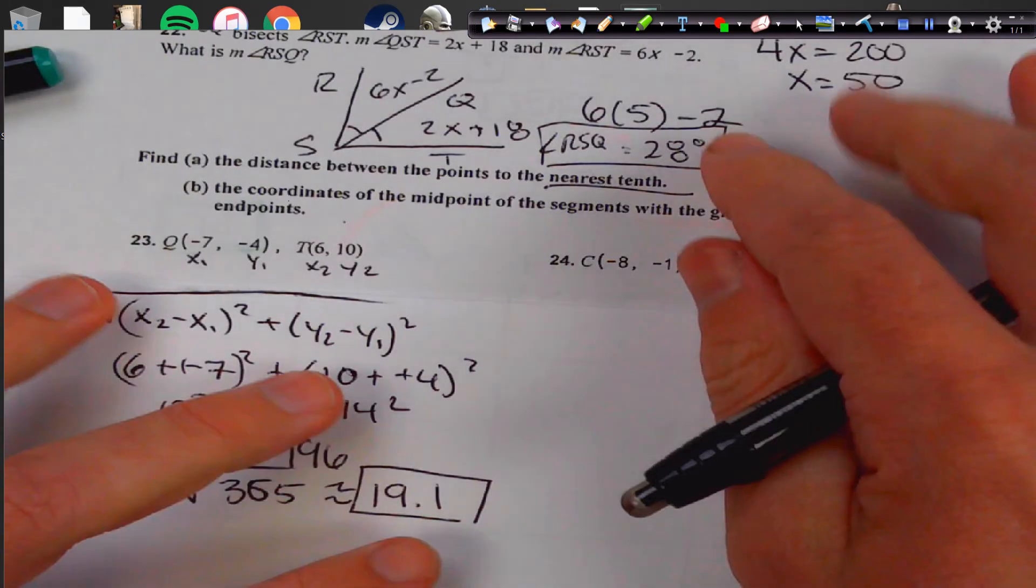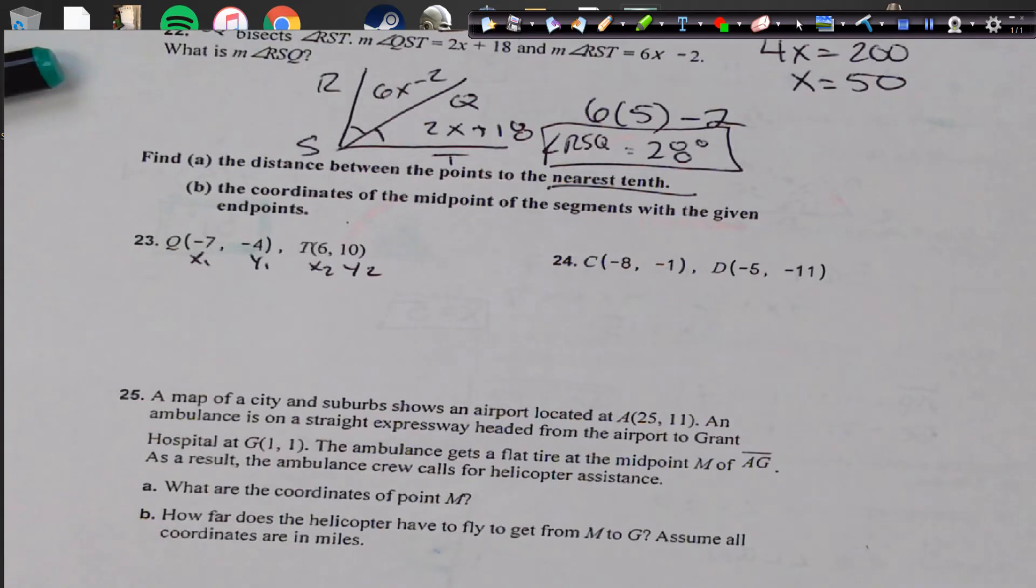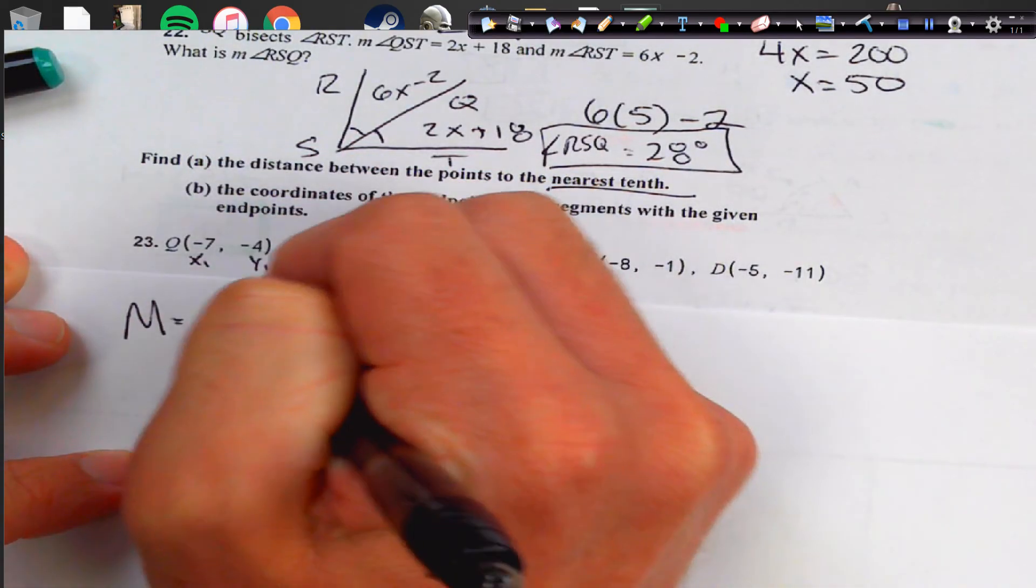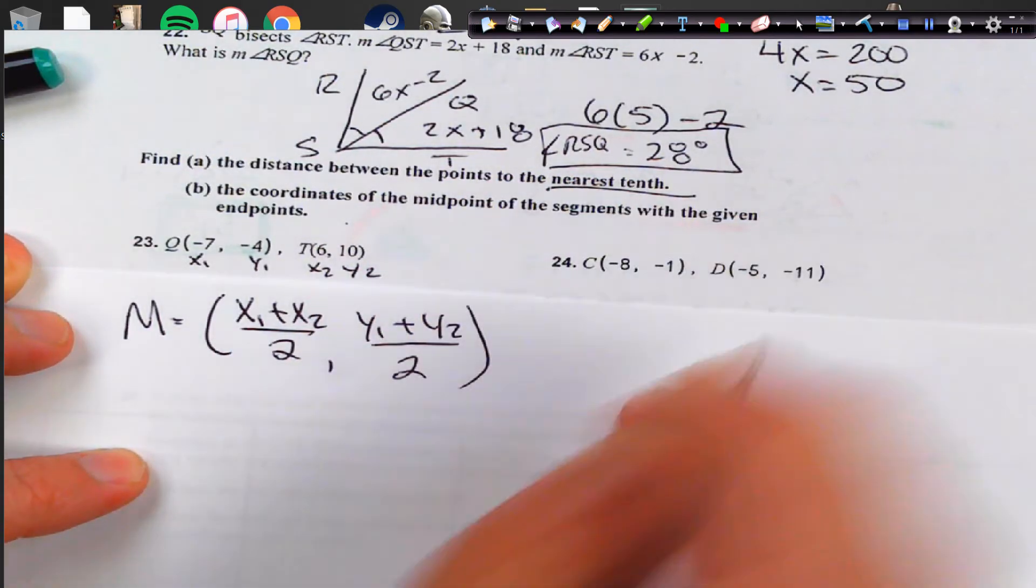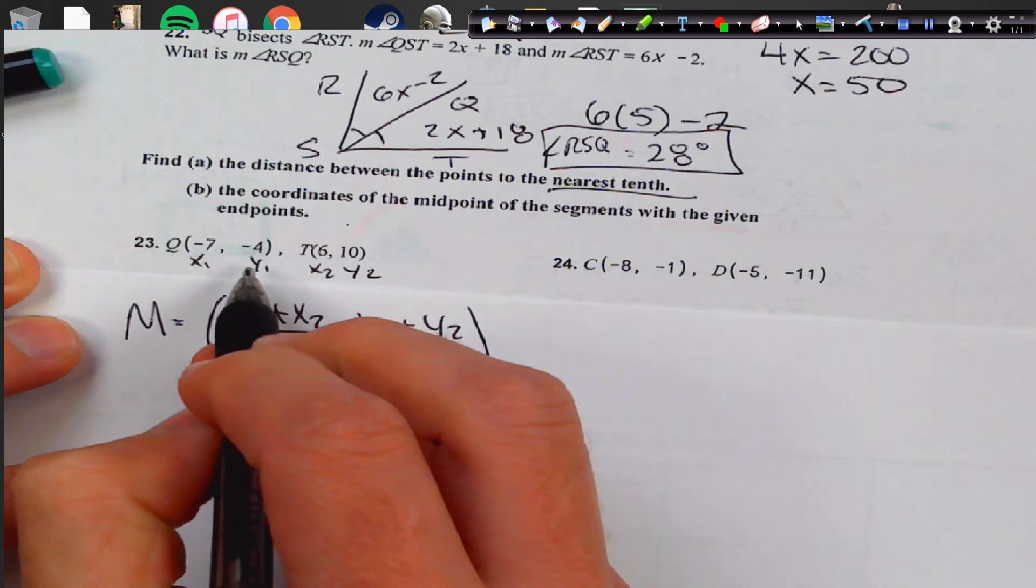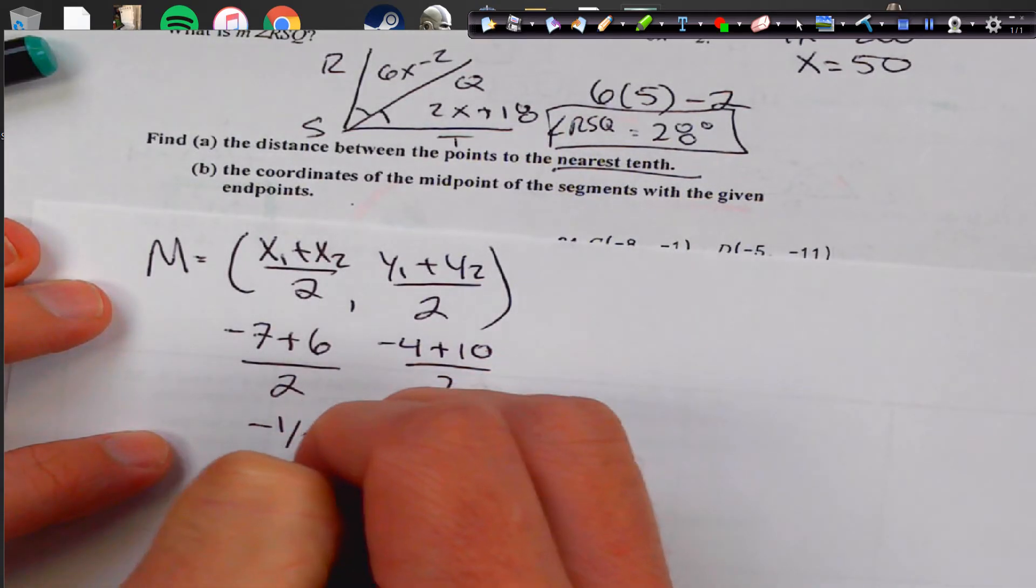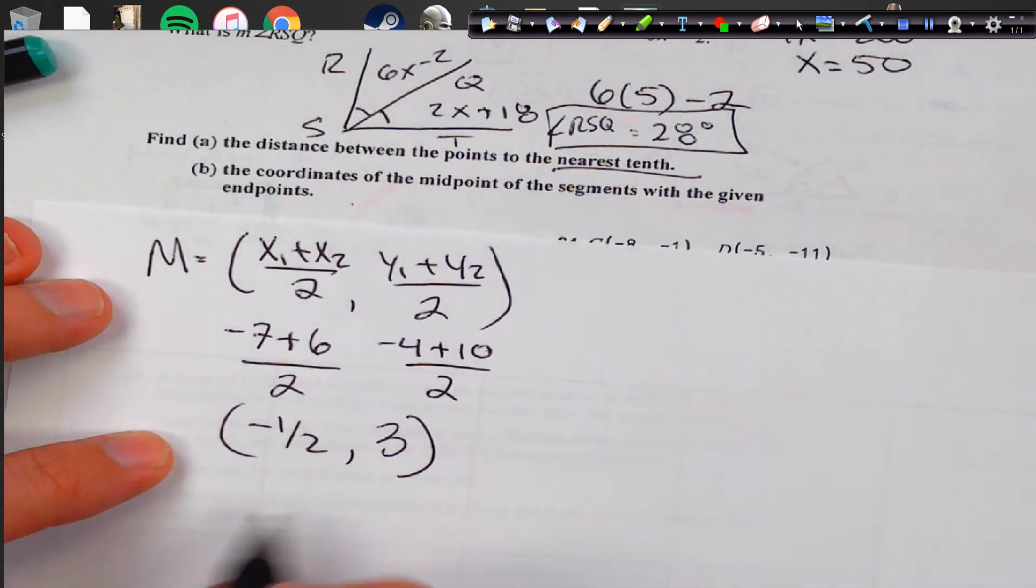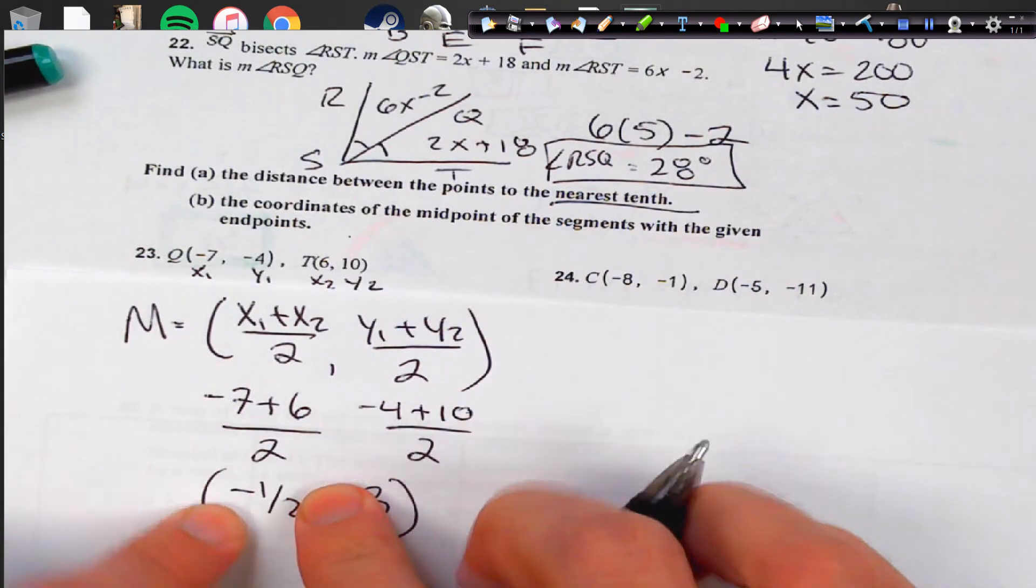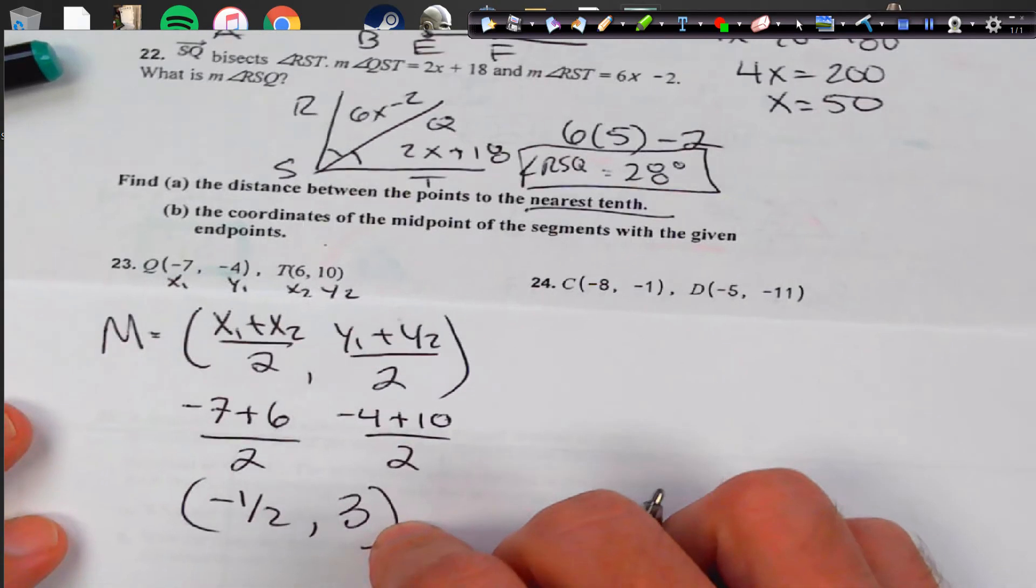So that's for that one. Now we're going to do the same thing, but use the midpoint formula. Sorry about that. Let's get a new fresh sheet of paper. Midpoint. x1 plus x2 divided by 2. y1 plus y2 divided by 2. And we're going to plug it in. Negative 7 plus 6 divided by 2. And we're going to get negative 4 plus 10 divided by 2. So that's going to be negative 1 half. And that's going to be 6 divided by 2, which is 3. So let's just double check that. I plugged those in correctly. Negative 7 and 6. Negative 1 half. Yep. And negative 4 and positive 10, which makes 6. 6 divided by 2 is 3. Okay. Very good.